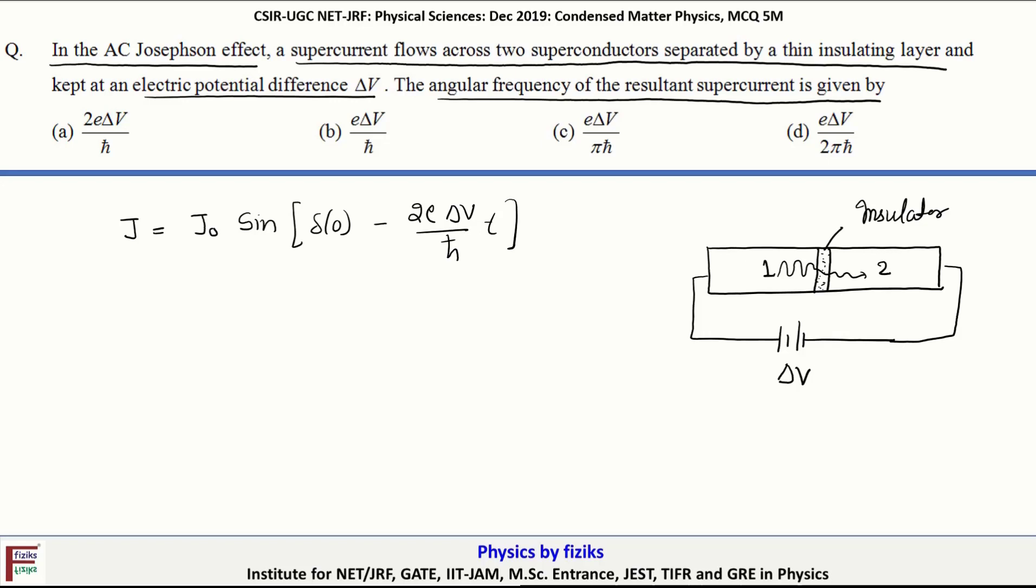In this equation, delta not represents the initial phase difference between the Cooper pairs crossing the junction. Delta V, of course, is the potential difference which we have applied. This equation can also be written as...